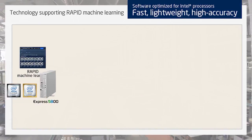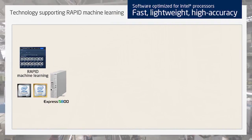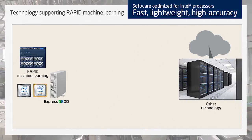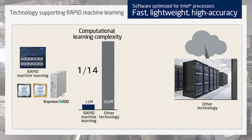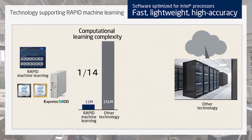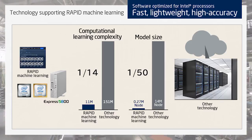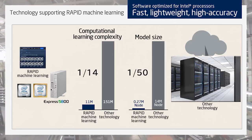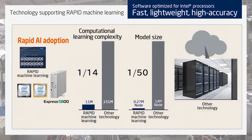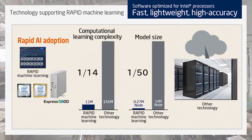Our Rapid Machine Learning is pre-tuned with fast, lightweight, high-accuracy software optimized for Intel processors. Results are achieved with one-fourteenth the computational learning complexity, while keeping the same accuracy as similar engines, and generated models are a fiftieth the size. Now you can adopt AI rapidly with this single server, instead of the big server capacity and months of preparatory work previously required.